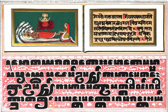Pali is a Middle Indo-Aryan language native to the Indian subcontinent. It is widely studied because it is the language of the Pali Canon or Tipitaka, and is the sacred language of some religious texts of Hinduism and all texts of Theravada Buddhism. The earliest archaeological evidence of the existence of canonical Pali comes from Pyu city-states inscriptions found in Burma, dated to the mid-5th to mid-6th century CE.